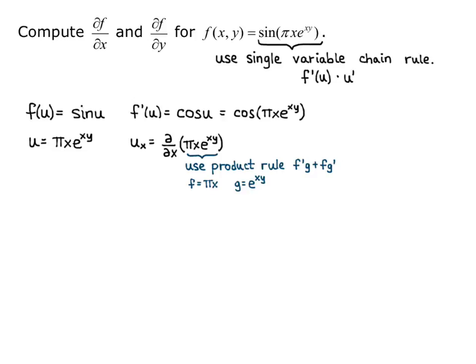Identifying f and g: f equals pi x and g equals e to the xy, and we take derivatives with respect to x. So f prime equals pi, and g prime equals e to the xy times the derivative of the inside function xy, which with respect to x gives y — so g prime is y e to the xy. Putting it together with the product rule: f prime g is pi e to the xy, plus f times g prime is pi x times y e to the xy. So the partial derivative of u with respect to x is pi e to the xy plus pi xy e to the xy.